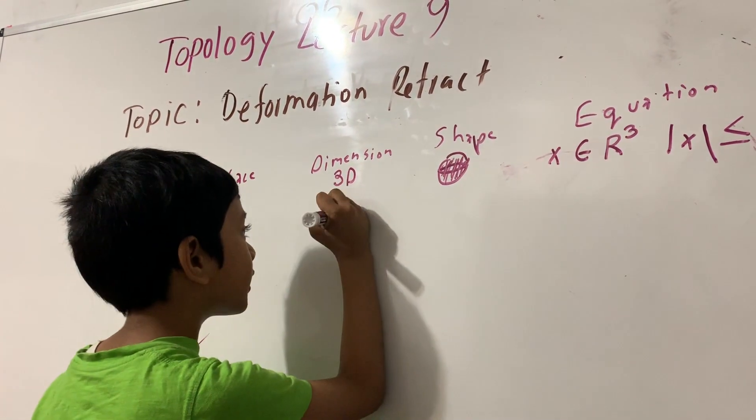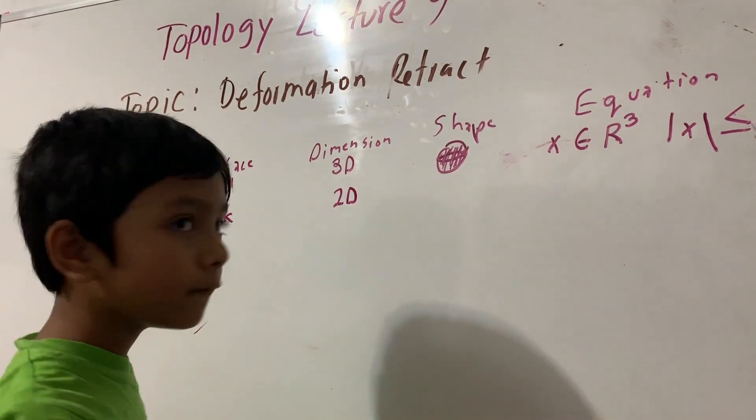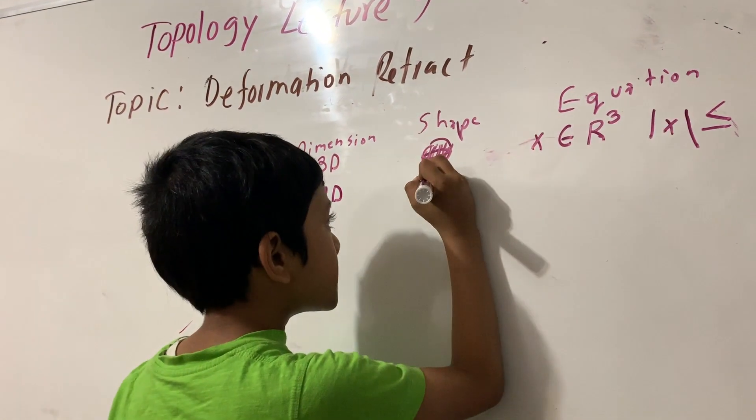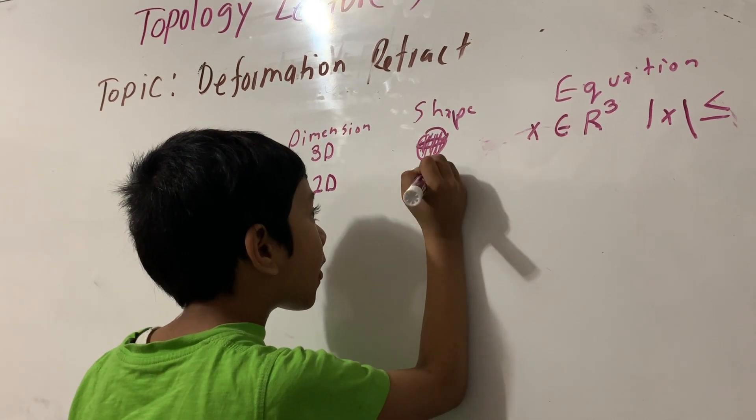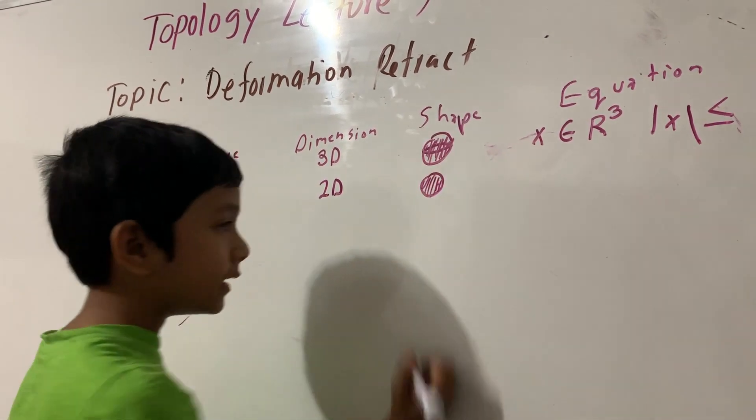A disk is two-dimensional, and that's like a ball, but it has it inside.